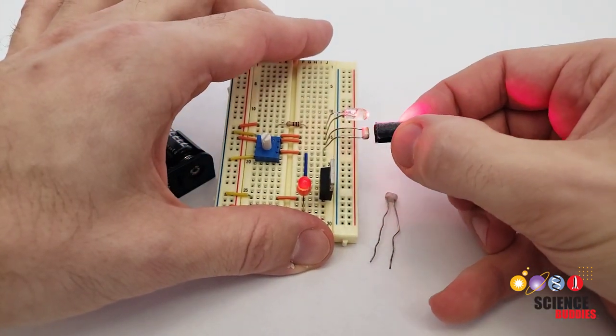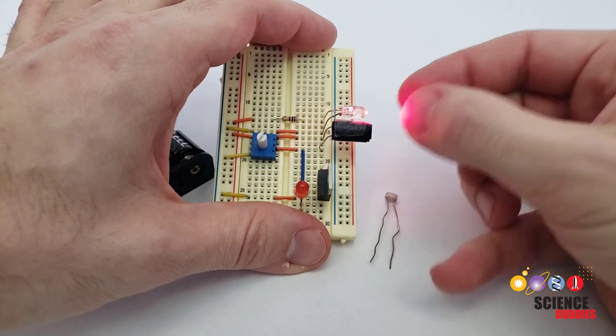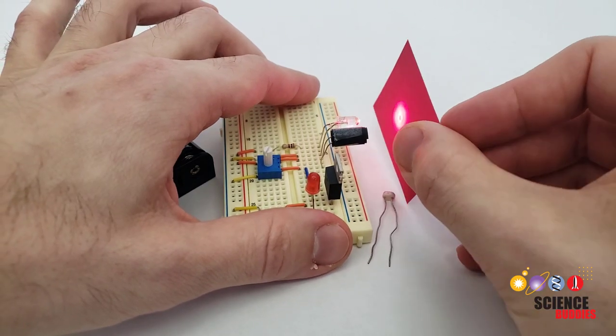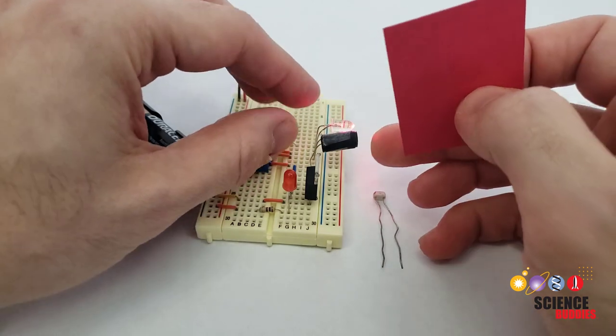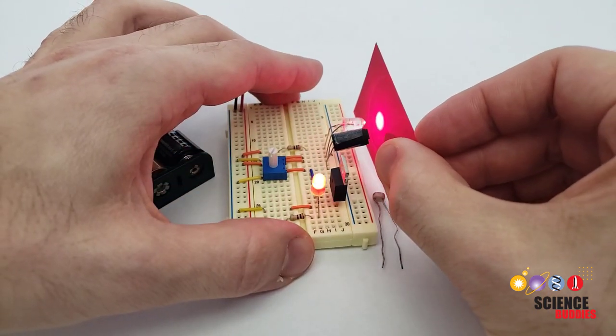So I have a photoresistor in the circuit here, and I've taped a little cylinder of paper around it to protect it from ambient light. So it's pointing in the same direction as the LED, and when I hold something like this piece of paper in front of the LED, then most of the light that the photoresistor sees is going to be the light that's reflected back from the LED.